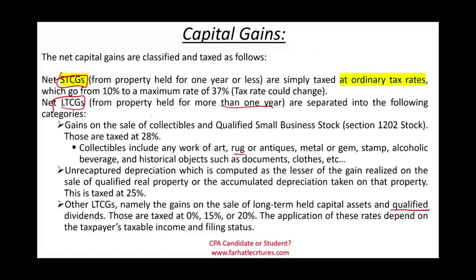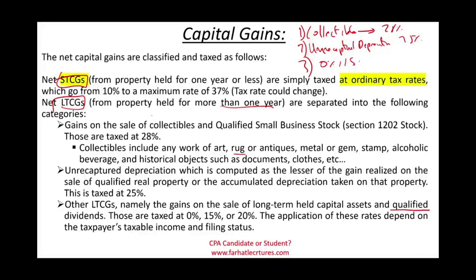So to summarize the long-term capital gain categories: collectibles are taxed at 28%, unrecaptured depreciation at 25%, and the most common category — other long-term gains and qualified dividends — at 0%, 15%, or 20%. Your net long-term capital gain could be subject to 28%, 25%, 0%, 15%, or 20%, depending on the type of asset. Application of the 0/15/20% rates depends on your taxable income and filing status.